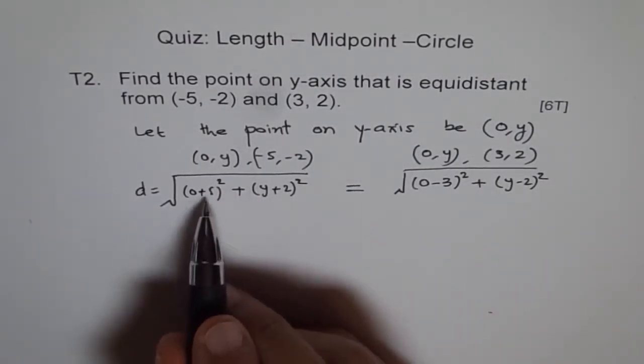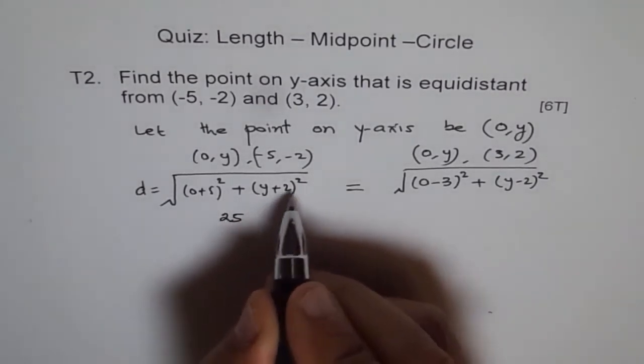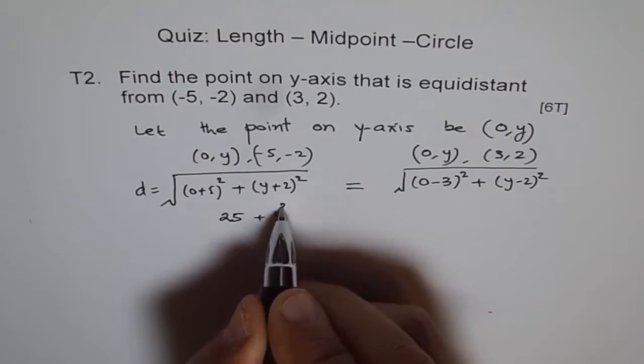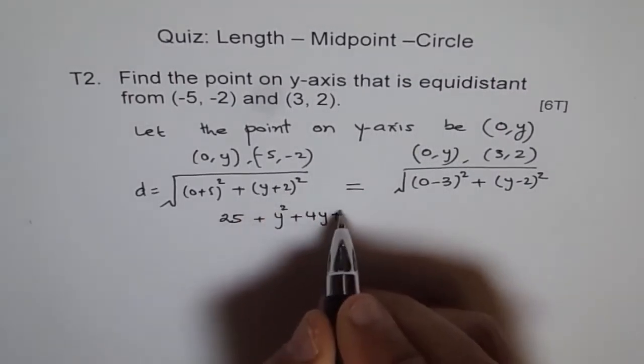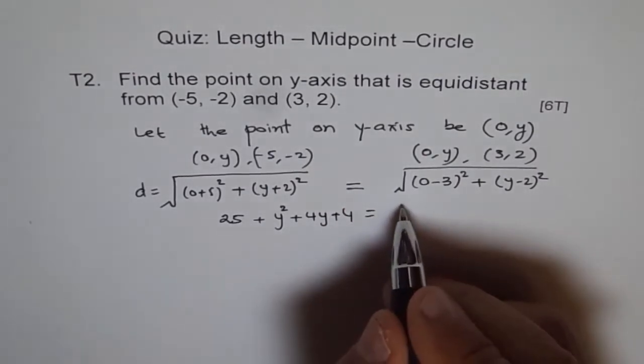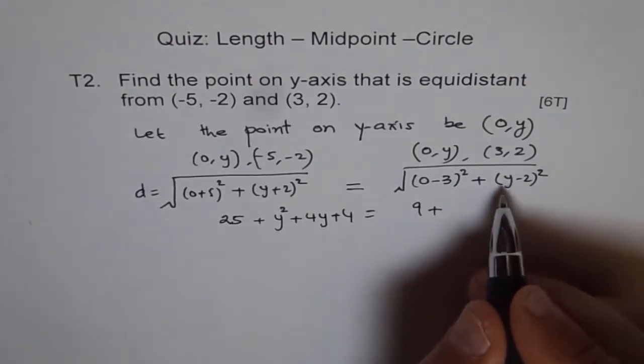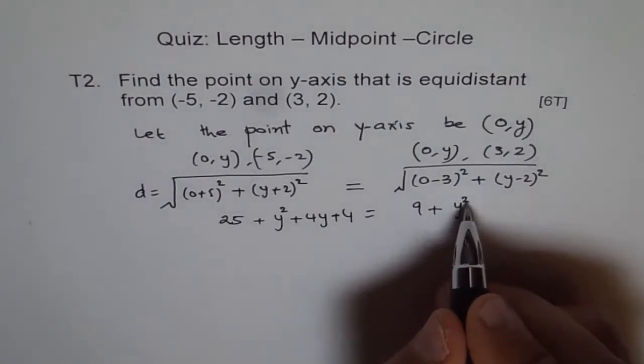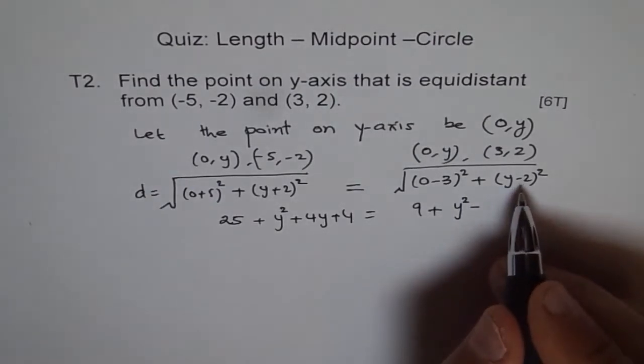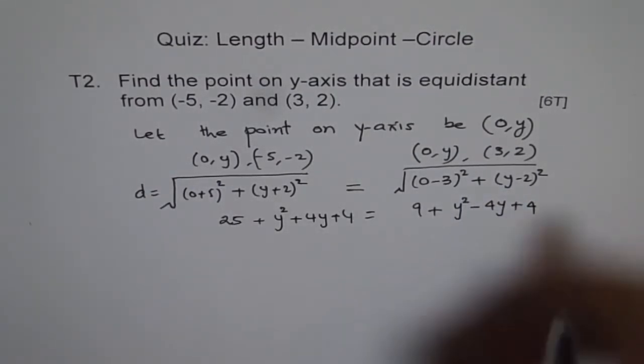And then we are left with 5² is 25. Here we'll square this which is y² plus 2ab, 4y plus 4, equals to 3² is 9 plus we'll expand this, (y - 2)² which is y² minus 2 times ab which is 4y plus 4.